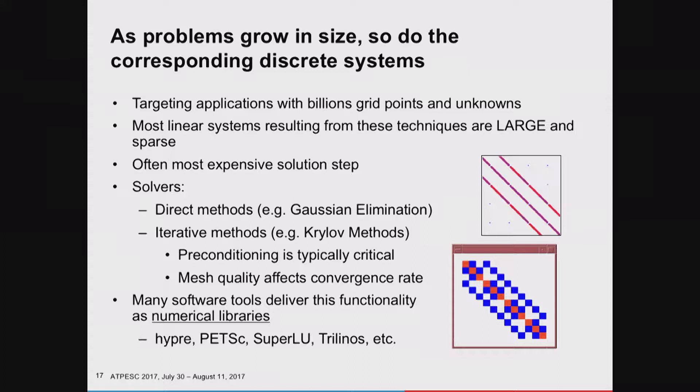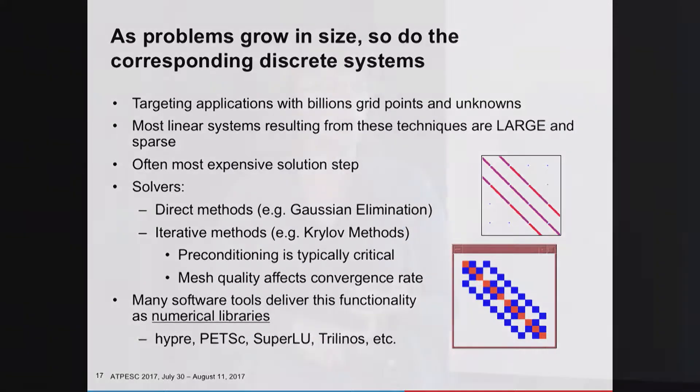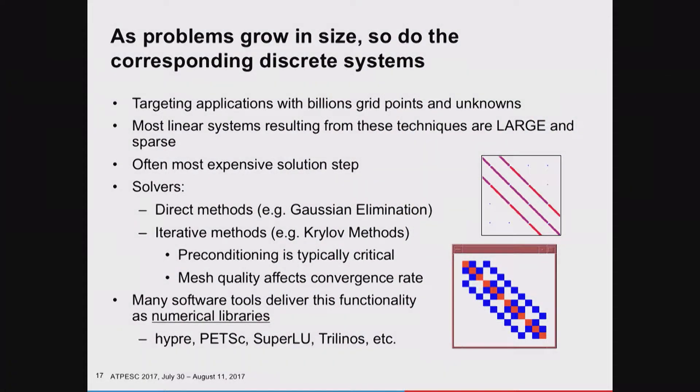As those meshes grow, so will the linear systems. The 2, minus-1 matrix I showed earlier can be expanded into much, much larger systems with billions of unknowns. Most of these linear systems are sparse. As Jack mentioned, they're not dense, and there are lots of different things you need to do to solve them. You can look at direct methods—Gaussian elimination is the one we learn about in your first year of numerical methods—which still have important applications. Sherry Lee will be talking about some of the work in SuperLU. Iterative methods are often commonly used: Krylov methods, conjugate gradient, GMRES, et cetera.